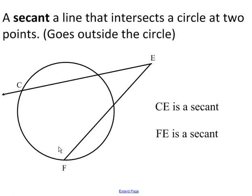A secant is a line that intersects a circle at two points and it goes outside the circle. So you see CE is a secant, and FE is also a secant.